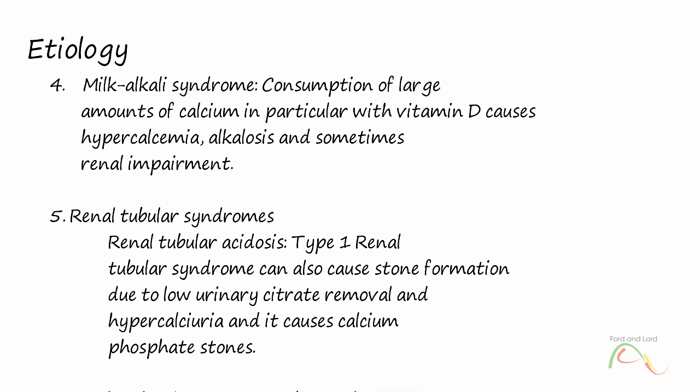Cystinuria: It's an autosomal recessive disorder in amino acid transportation in the gastrointestinal tract and renal tubules involving cysteine, lysine, arginine, and ornithine.